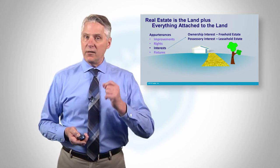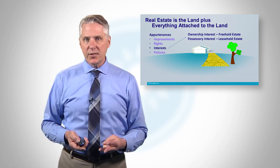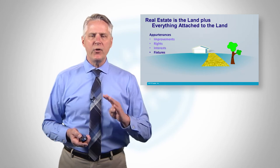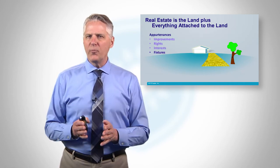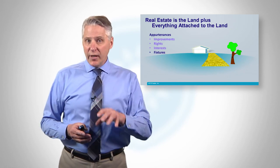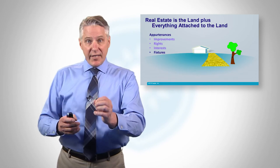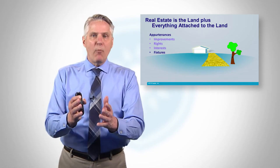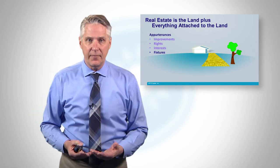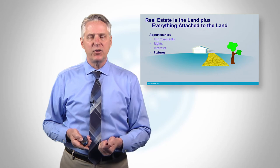So real estate is the land plus improvements and rights and interests. And finally, fixtures. We know what an improvement is — something attached to the land. A fixture is something that we attach to an improvement and attach it permanently, so it now becomes part of the improvement, which is attached to the land, so it runs with the land. So when I buy real estate, I get the improvements, the rights, the interest, and the fixtures.